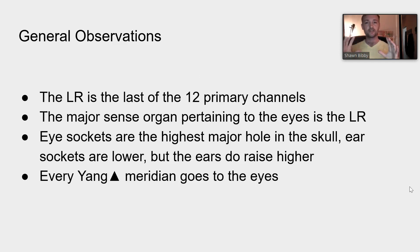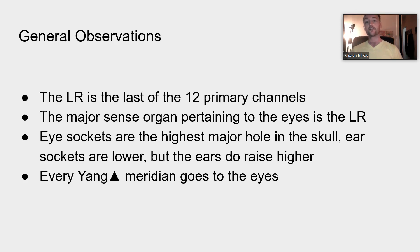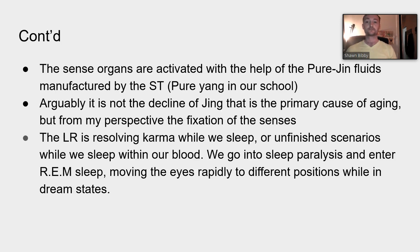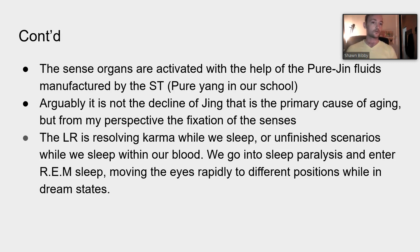The liver is the last of the 12 primary channels, controlling the hun, and is the major sense organ pertaining to the eyes. The eye sockets are the highest major holes in the skull, and every yang meridian goes to the eyes — each has an eye connection. The sense organs are activated by the pure yin fluids, which are manufactured by the stomach — what we call pure yin — a concept we know well.